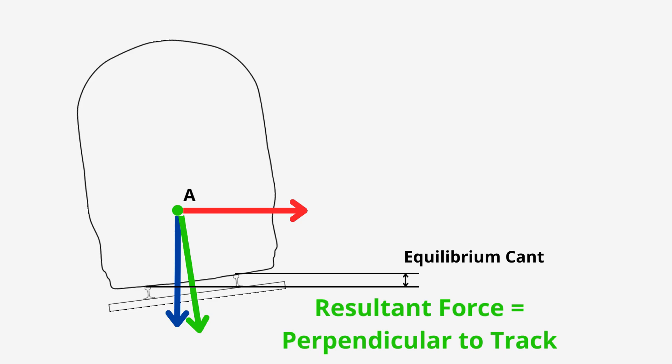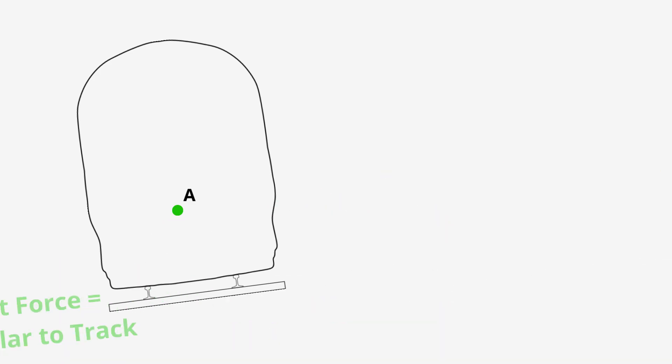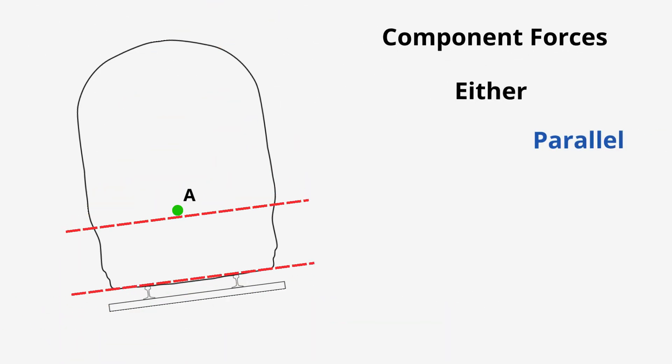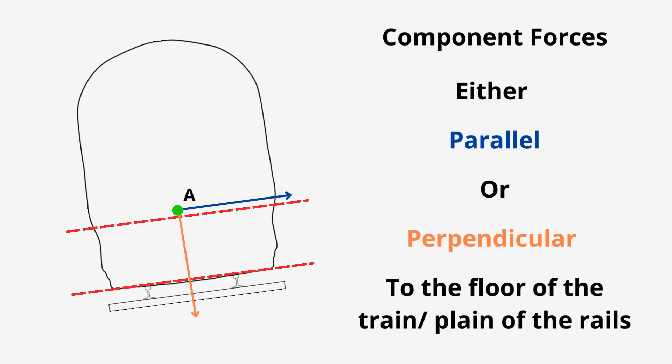That is why cant is applied to railway curves. But, to get to the constant number, we need to take it up a notch or two on the complexity scale. We also need to add a bit more detail onto the diagram, including some component forces. Our components are going to go either parallel to the floor of the train and the plane of the rails, or perpendicular to it. Remember how when our train was on the flat, this was the case?